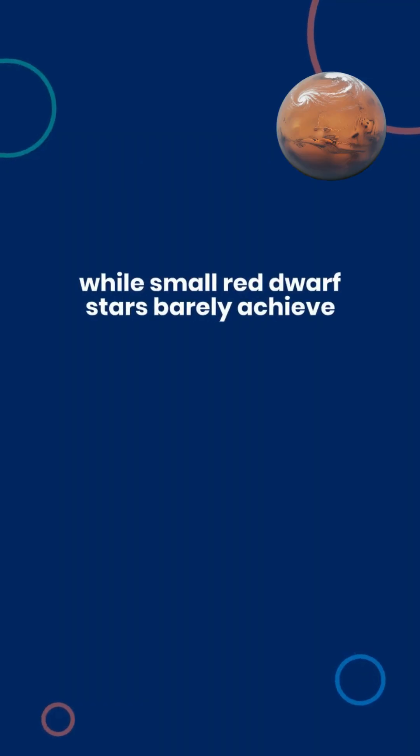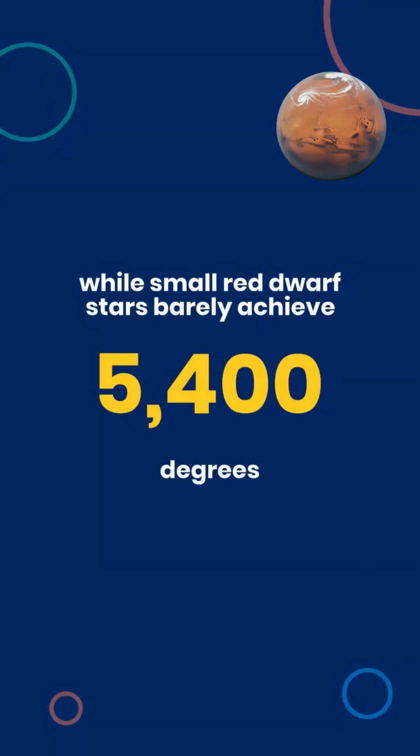While small red dwarf stars barely achieve 5,400 degrees, despite running the same fusion processes at much slower rates.